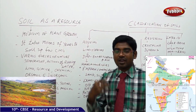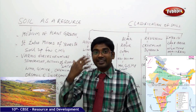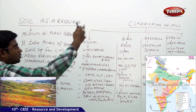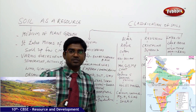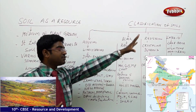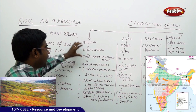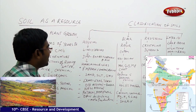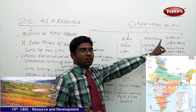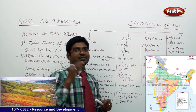So, based on the color, thickness, texture, age, chemicals, and properties, we have categorized the soils into five major categories. The four main categories are alluvial soil, black soil, red and yellow soil, and laterite soil. The fifth category is arid soil, which we shall discuss later.